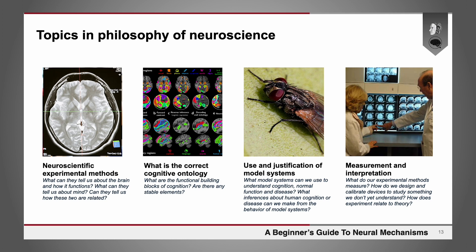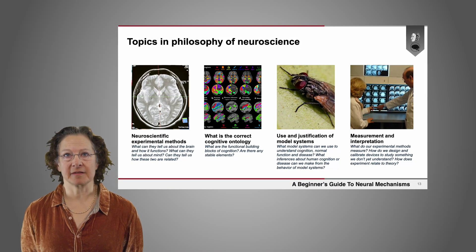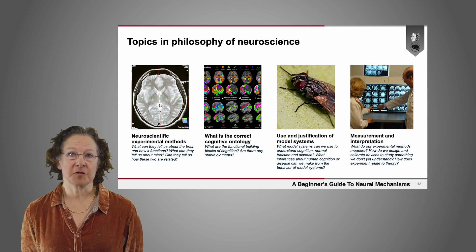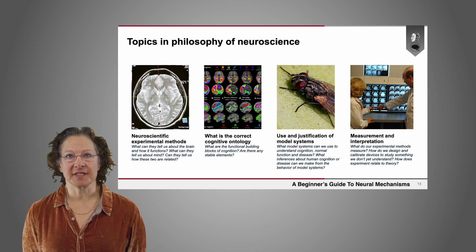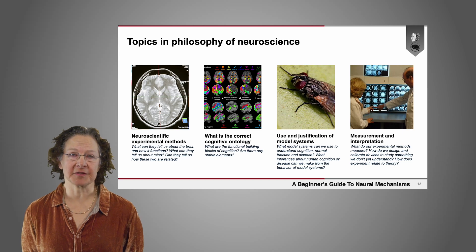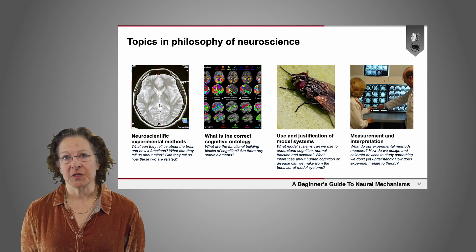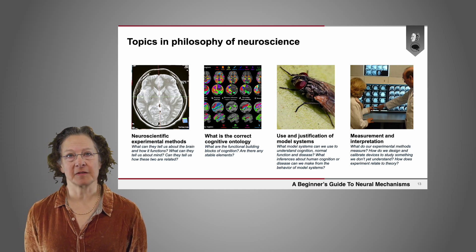We might also talk about the use and justification of model systems — not just computational models but also the kinds of animal models that people typically use for figuring out basic things about biological function and the structures of nervous systems. What model systems can we use to understand human cognition — both normal function and disease? What inferences about human cognition or disease can we make from the behavior of model systems? Many neuroscientists use things like rats or monkeys to understand human brain function, but obviously rats and monkeys aren't exactly like us.